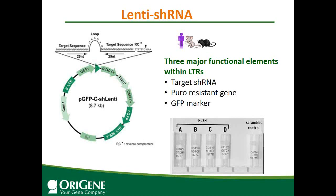The shRNA kit has five tubes: four gene-specific shRNAs each individually in a tube, and one scramble control as a negative control. OriGene offers a performance guarantee of at least 70% or higher knockdown for their shRNA.